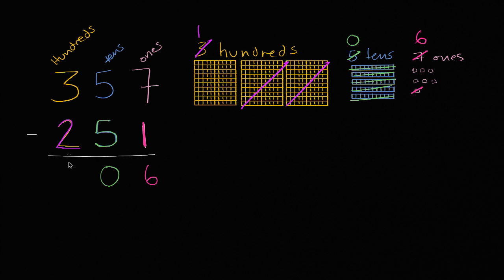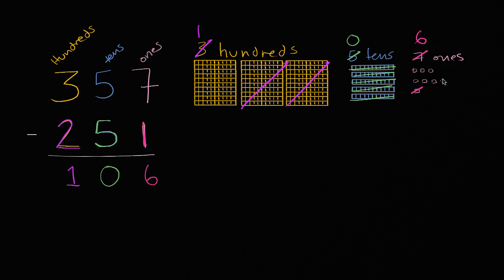Three hundreds minus two hundreds is one hundred. So hopefully this gives you an appreciation of what's happening in place value. You could just say, I'll line up the numbers and look at the place values: seven minus one is six, five minus five is zero, three minus two is one. This is seven ones minus one one, which gives us six ones. Five tens minus five tens, so you're not going to have any tens left over — zero tens. And three hundreds minus two hundreds is going to leave us only one hundred. So we're going to be left with one hundred and six: one hundred, zero tens, and six ones.